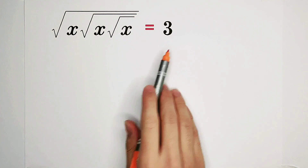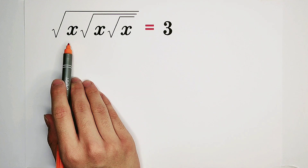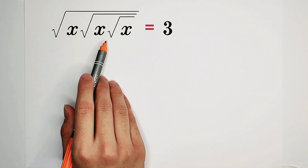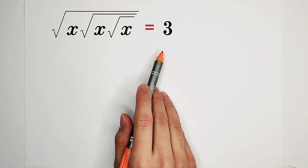Solve this equation: square root of x times square root of square root of x times square root of square root of square root of x equals 3.